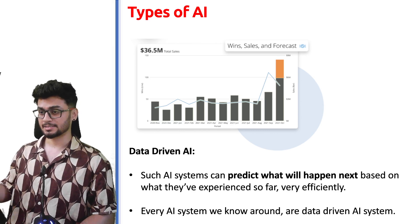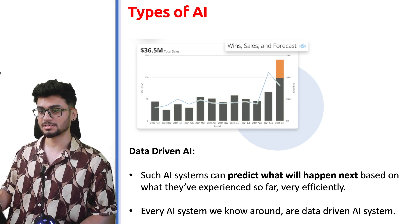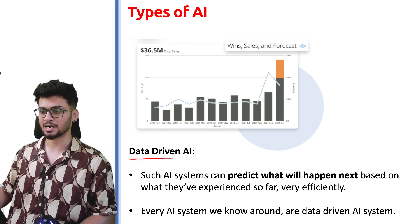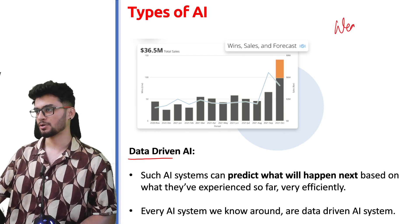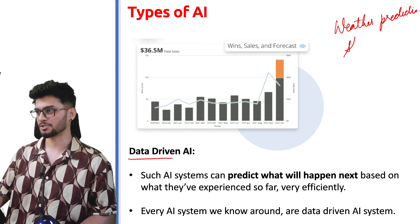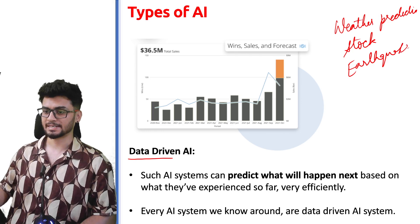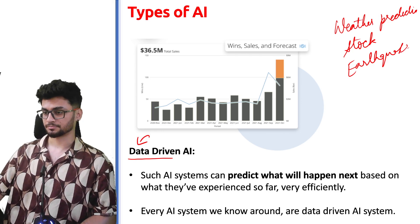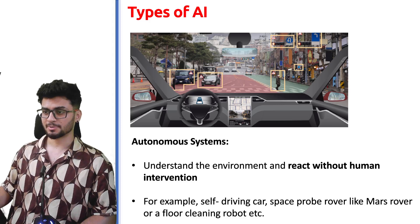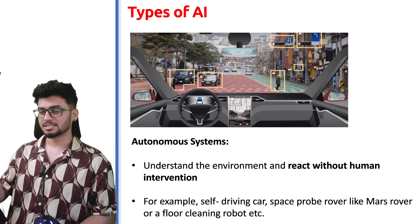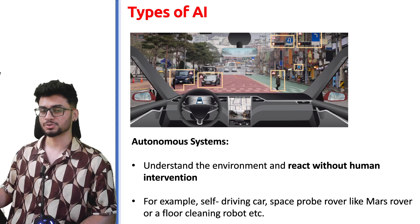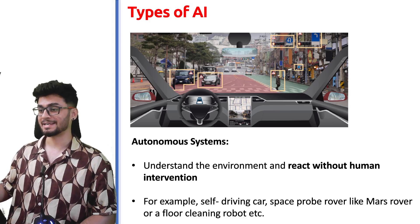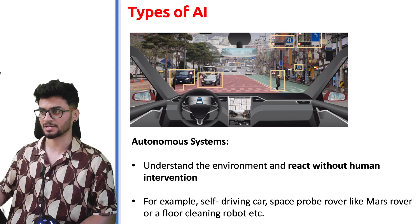The first type is data-driven AI. Generally, you provide this AI with data and it will predict something for you — it can be weather prediction, stock prediction, or even earthquake prediction. The next type is autonomous systems — these systems take in your surroundings using sensors or cameras and then try to react to the surroundings without any human intervention.